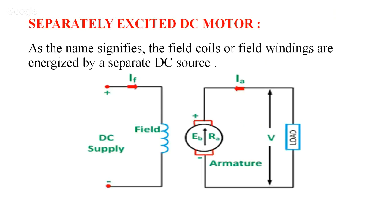In a separately excited DC motor, as the name implies, the field coils or field windings are energized by a separate DC source. Observe the circuit diagram: this is the DC motor, Eb is the back EMF opposing the applied voltage, Ra is the resistance of the armature, IA is the armature current, the field winding is placed separately and excited from a separate DC source, and IF is the field current.